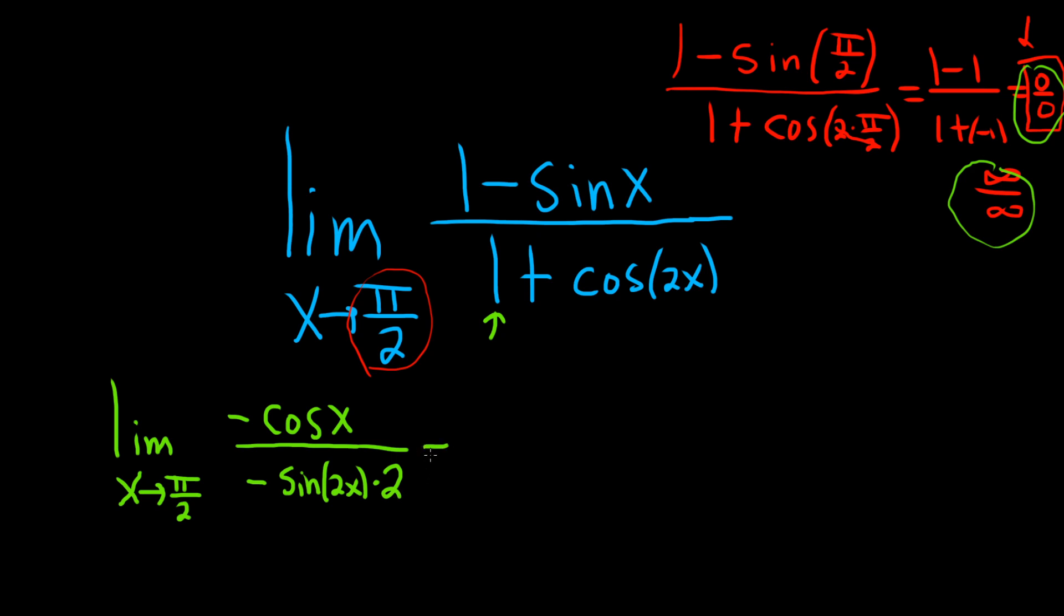Alright let's clean this up a little bit. This is the limit as x approaches pi over 2 of cosine - the negatives cancel - cosine x over 2 sine 2x.